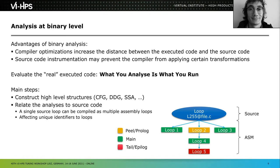Now we'll dig into the binary analysis layer — what MAQAO does at the low level and the issues we face going down to binary level to perform analysis. The idea is to analyze what you run. We don't analyze source code, because once it goes through the compiler it turns into something totally different. We go down to the binary level because that's where code patterns are expressed in the smallest possible units — the instructions — which we can analyze and profile statically or dynamically.